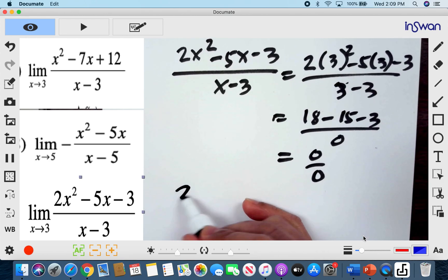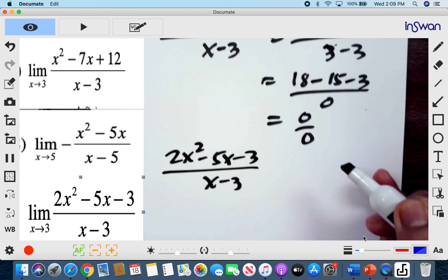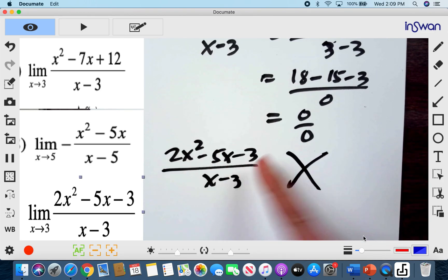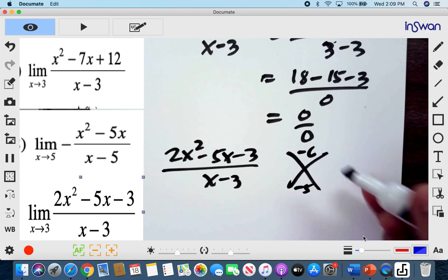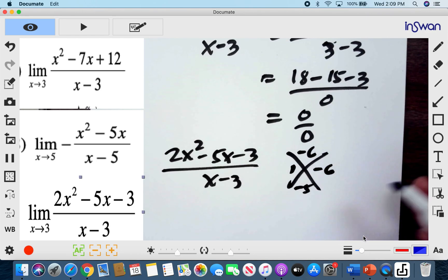Now let's simplify the expression. 2x squared minus 5x minus 3 all over x minus 3. Then of course we can factor this by the AC method. 2 times negative 3 is negative 6. And then you have negative 5 in here. So the factors of negative 6 that gives out a sum of negative 5 is negative 6 and positive 1.